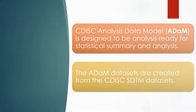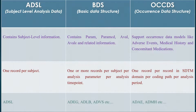Let's see the structure of ADaM datasets. Basically in ADaM we have three data structures. The first one is Subject Level Analysis Dataset or ADSL. The second one is Basic Data Structure or BDS. And the third one is Occurrence Data Structure or OCCDS. These are the three types of datasets we usually see in ADaM.